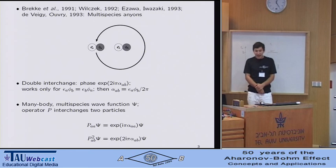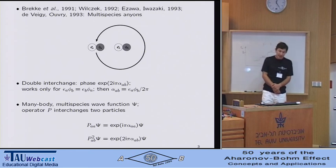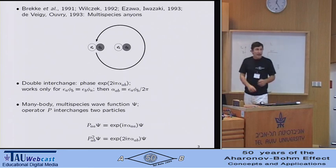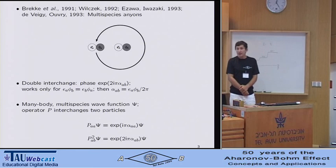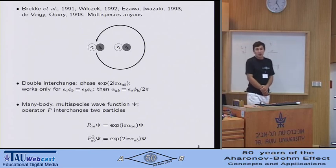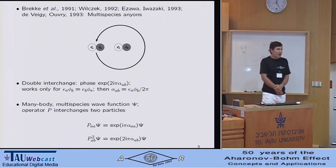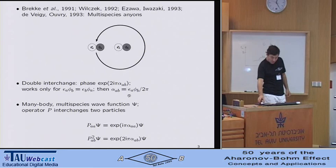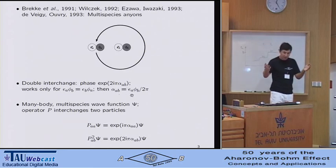The only slightly non-trivial question here is what is the expression for alpha_AB? Which charge times which flux? And it turns out that the center of mass motion in this system only decouples if the charges and fluxes are proportional to each other. And then the expression for alpha_AB is simply one charge times the other flux or vice versa. It's symmetric.